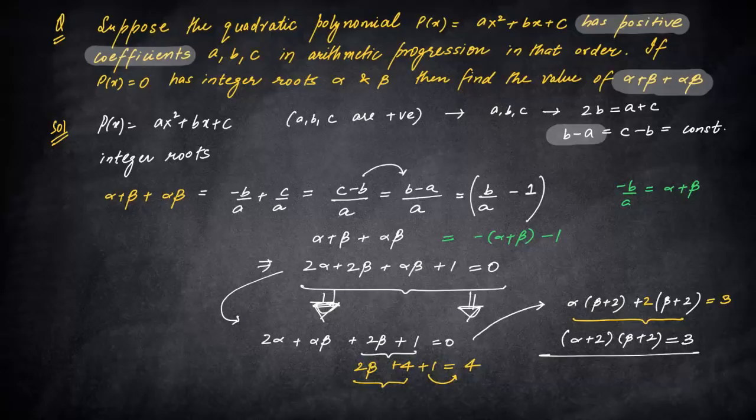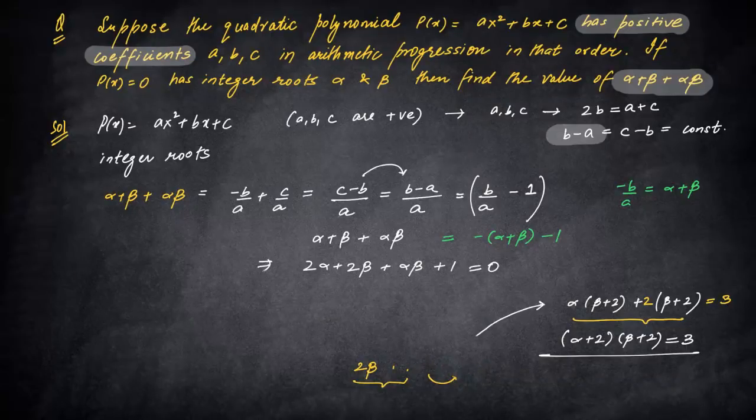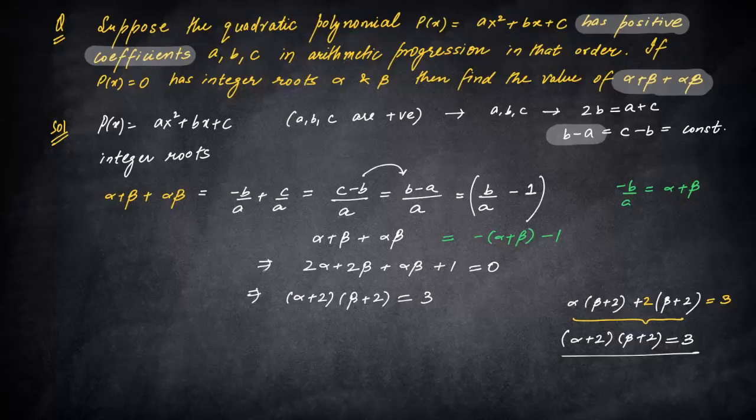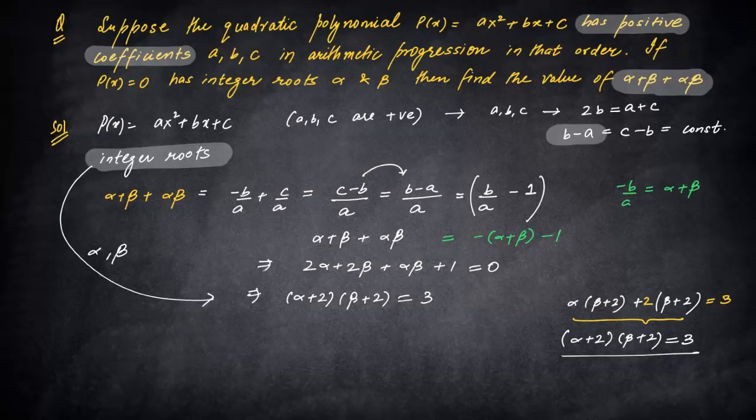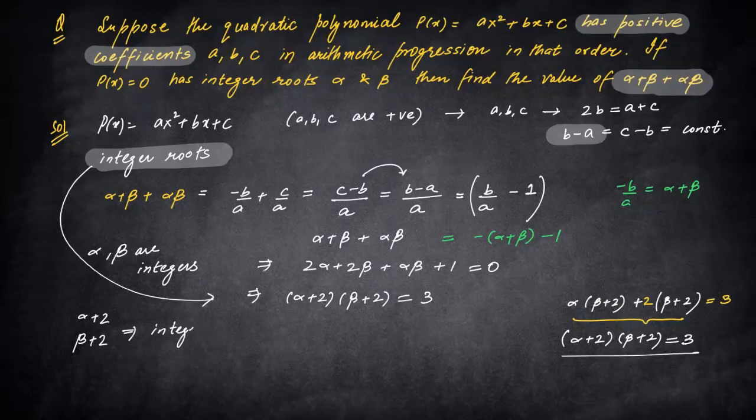This is the main part of this question. If you are not able to understand, please pause the video and watch the step again, because these kinds of steps are important, which could help you in a tough question or an exam like KVPY. Now we have reached the step that (α + 2)(β + 2) = 3. Now we have not used one of the statements given in the question till date. Now the integer root condition comes into the picture.